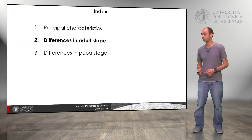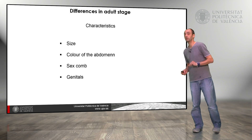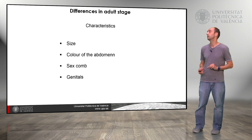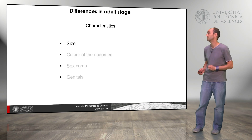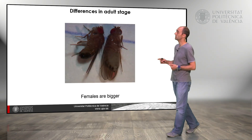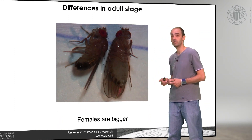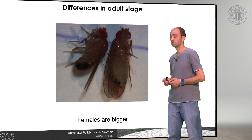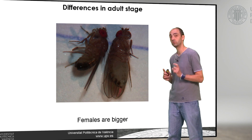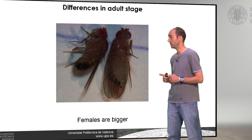What are the differences in adult stage? We have four main differences: size, color of the abdomen, the sex comb, and the genitals. Looking at size first — in this picture we see that females are bigger than males. So if we compare two flies, we can use that size difference to determine which one is female and which one is male.